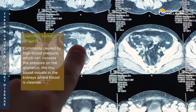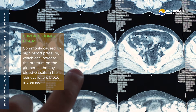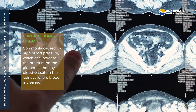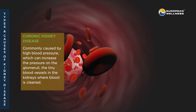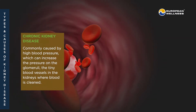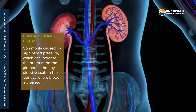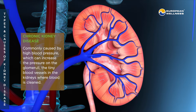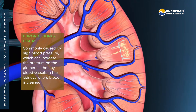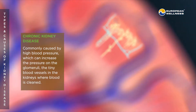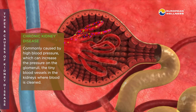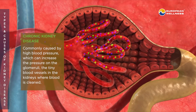Chronic Kidney Disease is a long-term condition that doesn't improve over time. It's commonly caused by high blood pressure, which can increase the pressure on the glomeruli, the tiny blood vessels in the kidneys where blood is cleaned. Over time, the increased pressure damages these vessels and kidney function begins to decline.